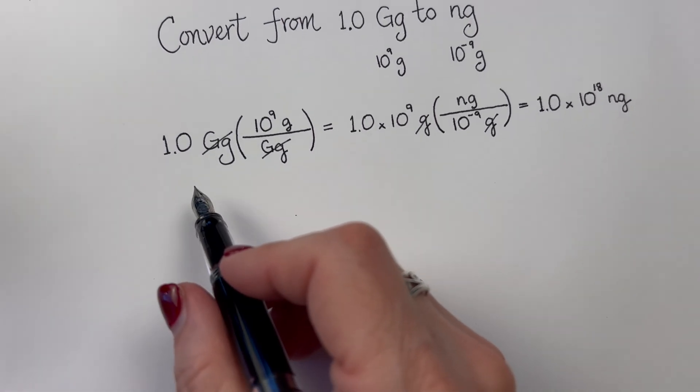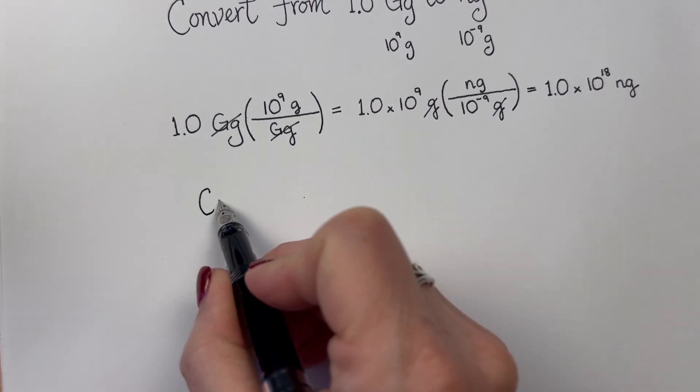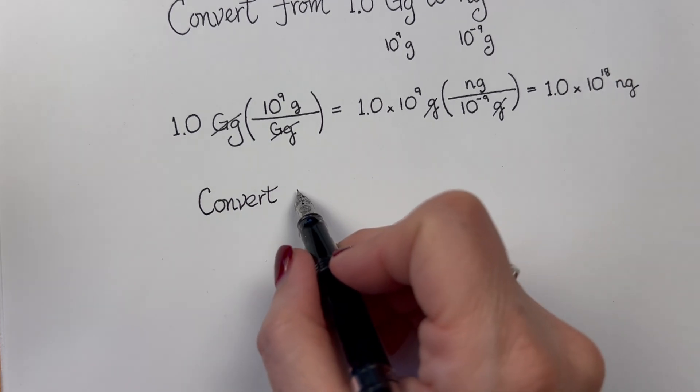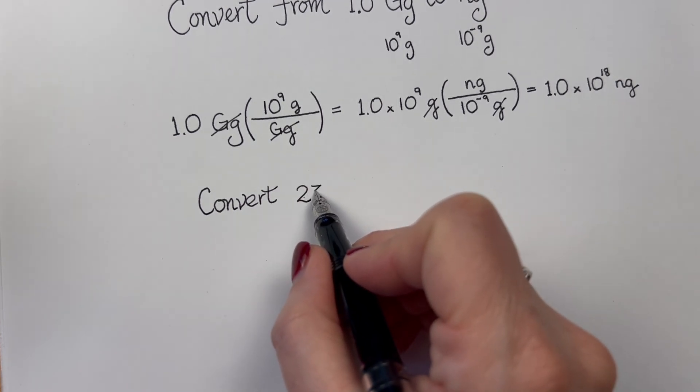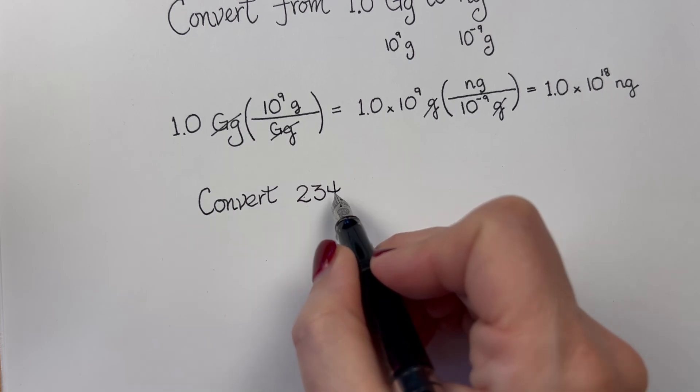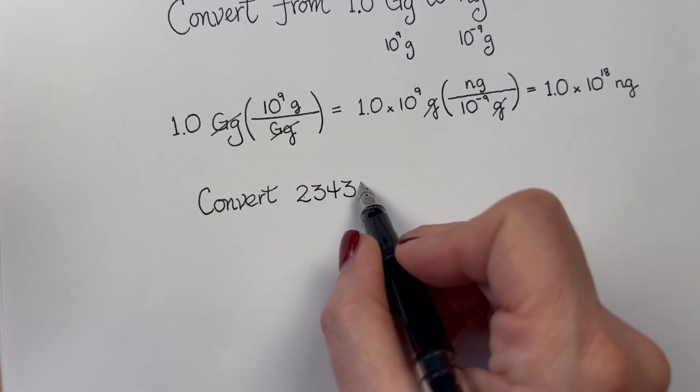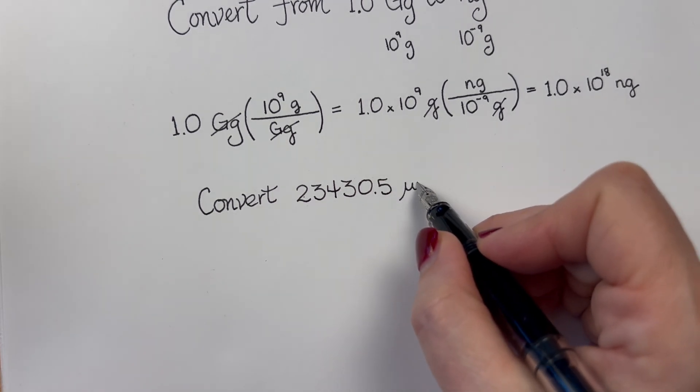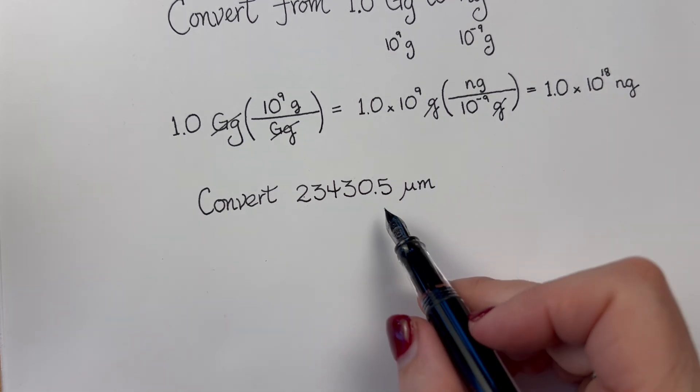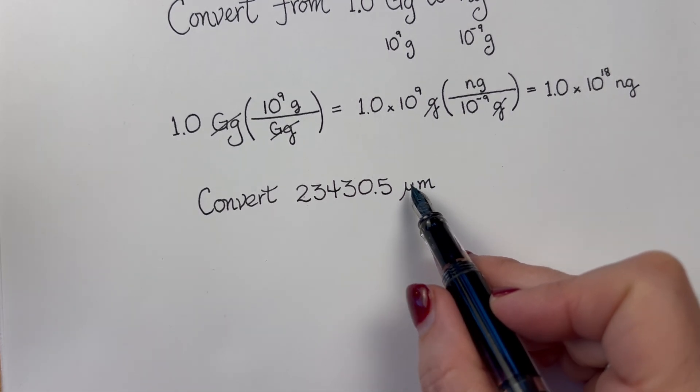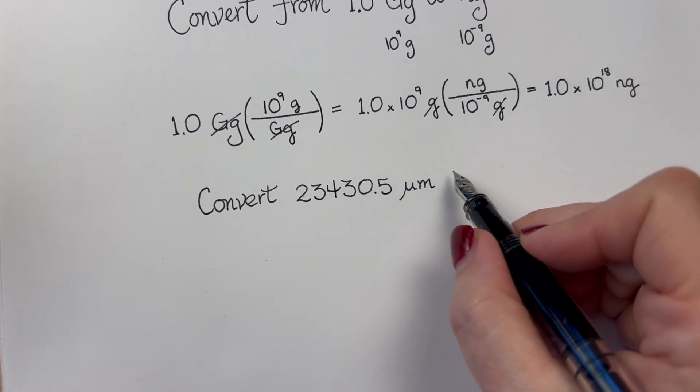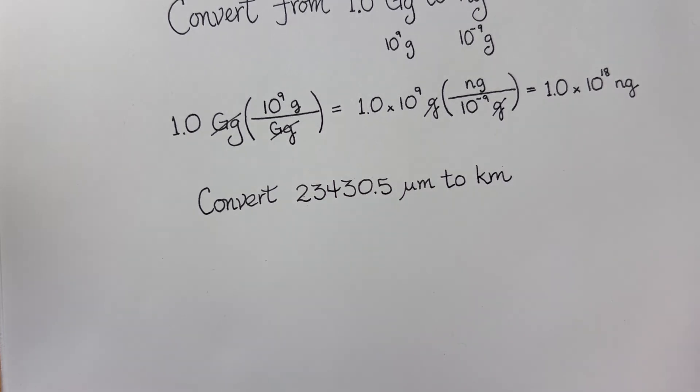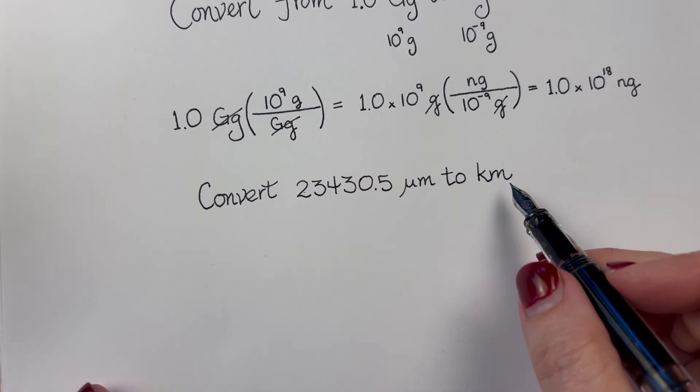And let's use more significant figures this time. Alright, now, let us convert. How about 234305 micrometers. So that's a mu, micro, micrometers. And let's convert this to kilometers.